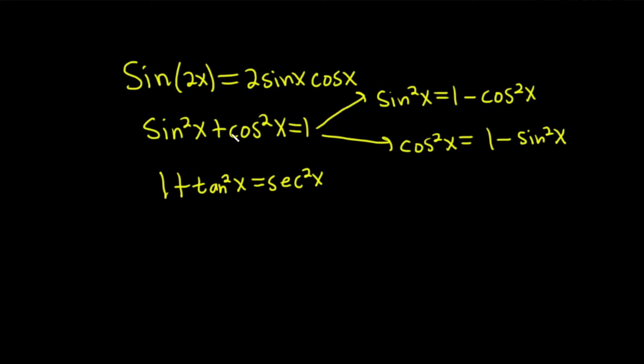The other one that's really important is 1 plus tan squared x is secant squared x. You can come up with this one by dividing everything here by cosine squared. And the other one that's kind of important, it doesn't come up that much, but I'll write it for completeness, is this one here. And again, you can come up with this one by dividing sine squared plus cosine squared equals 1 by sine squared.